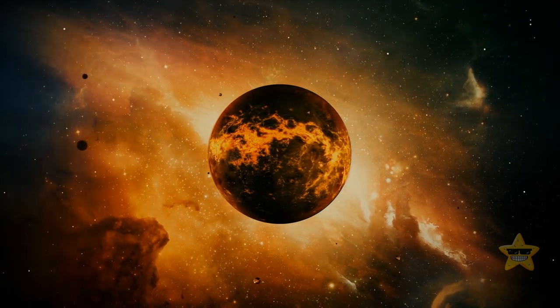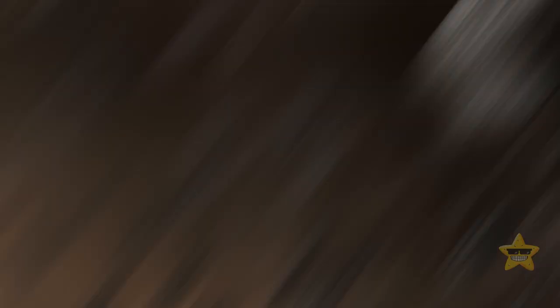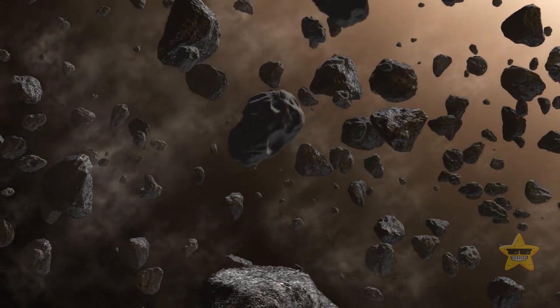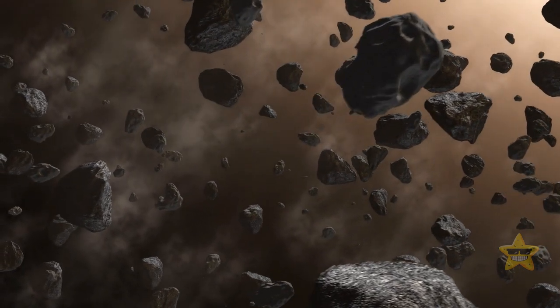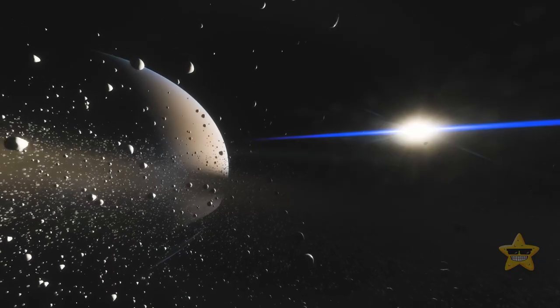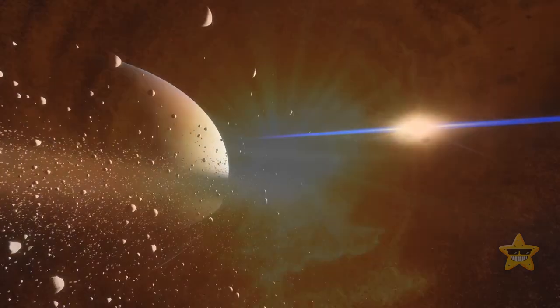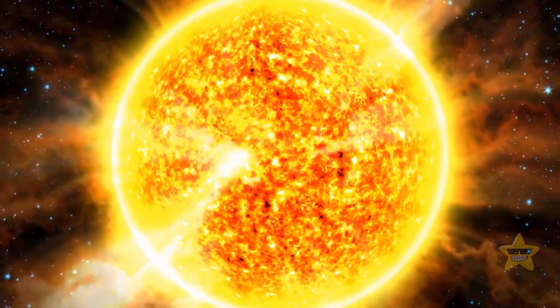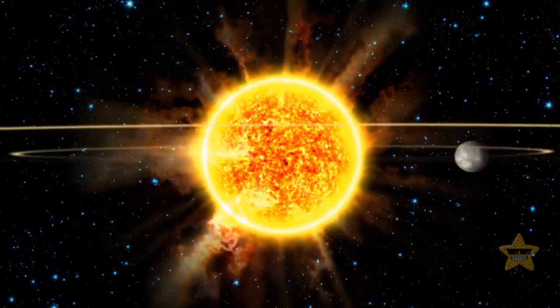But not everything became a planet. Some pieces remained small and formed the asteroid belt. Other small leftover pieces became asteroids, comets, and meteoroids. That's how our space system and everything in it, including our Earth, came to be.